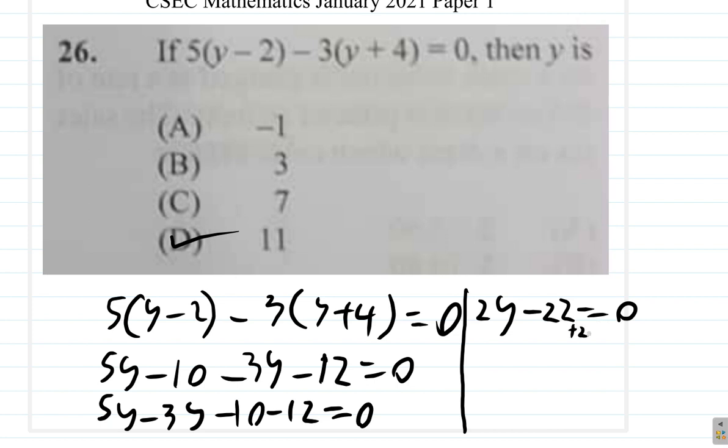So, we plus 22. Plus 22 here. Negative 22 plus 22, that's gone. That's 0. 2y equals 0 plus 22 is 22. And, if we divide and say 2y equals 22, we divide by 2. Divide by 2. 2 cancels 2. So, we left with y equals 22. And, there are 11 2s in 22. Alright? So, we get 11. See that?